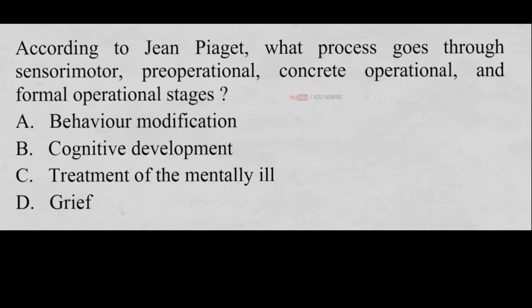According to Piaget, what process goes through sensorimotor, preoperational, concrete operational, and formal operational stages? A. Behavior modification, B. Cognitive development, C. Treatment of the mentally ill, D. Grief. And the correct answer is B, Cognitive development.